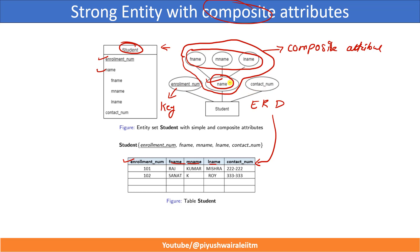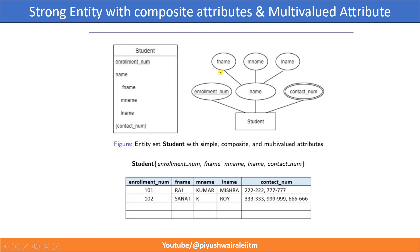The same representation applies here also. Student is basically a table, enrollment number is a key, then FNAME, middle name, last name from the composite attribute, and contact number. The same constraint is applied to enrollment number — it should be unique and not null. The only thing to remember is that while storing a composite attribute, we only store FNAME, middle name, and last name — we are not storing the root attribute of the composite attribute. Please remember this point.